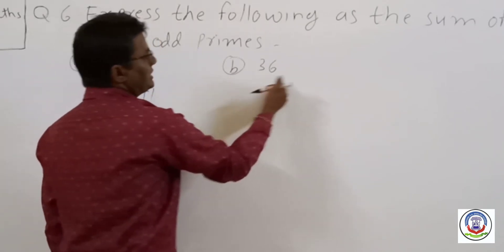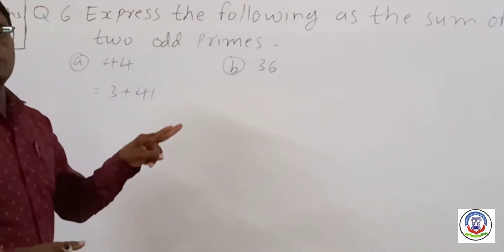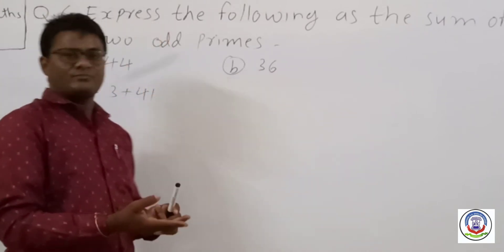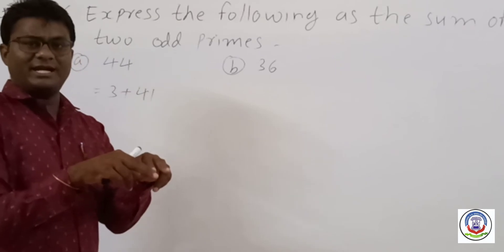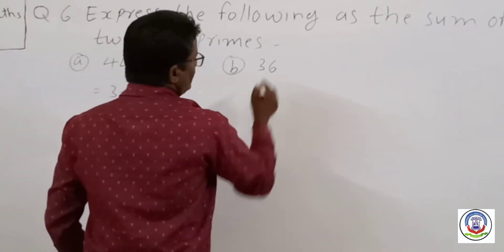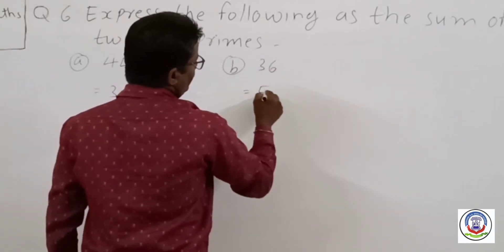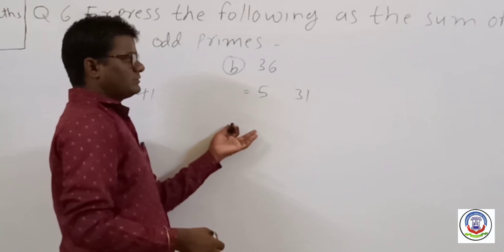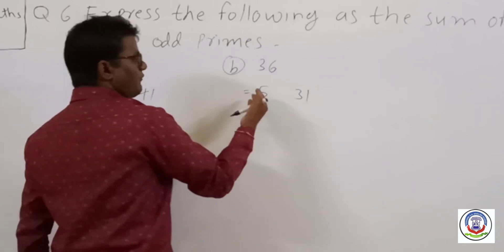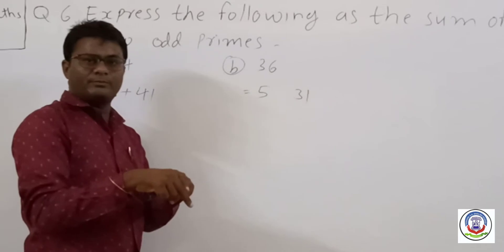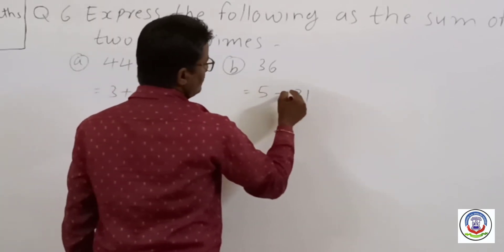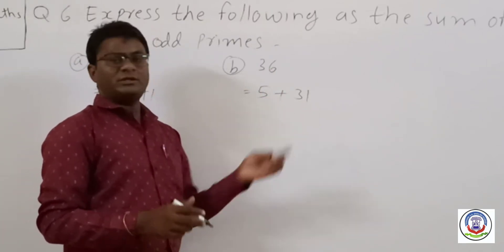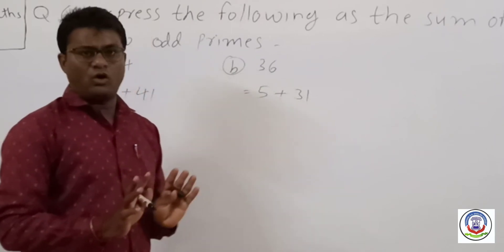For question 6 part b, we have 36. We need to write 36 as the sum of two odd prime numbers. We split it as 5 and 31. Both 5 and 31 are odd prime numbers. So 36 equals 5 plus 31, expressed as the sum of two odd primes.